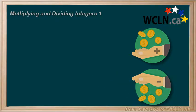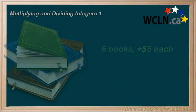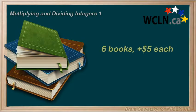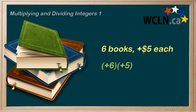So, you have the idea? What if we sold six books and we earned $5 for each book we sold? We'd have six groups of $5, or plus 6 times plus 5 equals plus 30. We'd have a $30 stash — $30 to the positive.